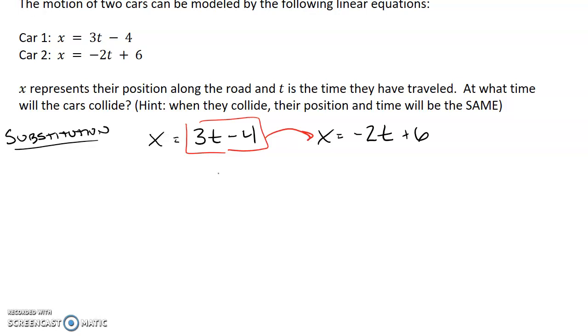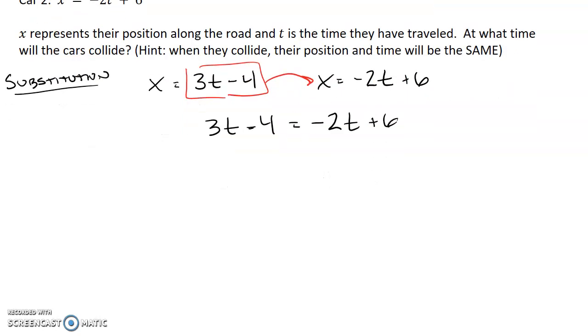And when you do that, you get a new equation: 3t minus 4 equals negative 2t plus 6. Some people will refer to this as setting them equal to each other, which is exactly what you're doing. You're just taking the x pieces and setting them equal to each other. And what you've done is eliminated x as a variable. And now you can do the algebraic step to solve for t.